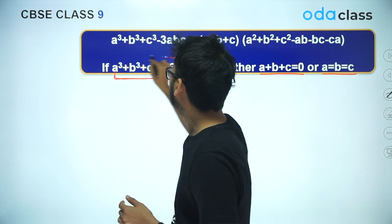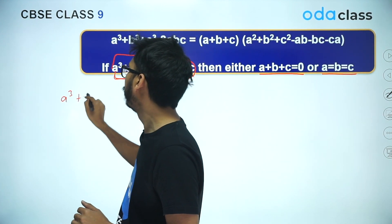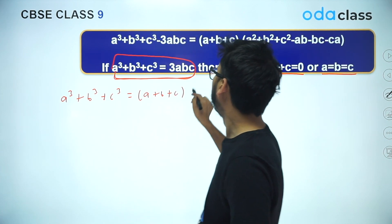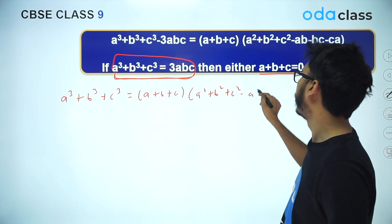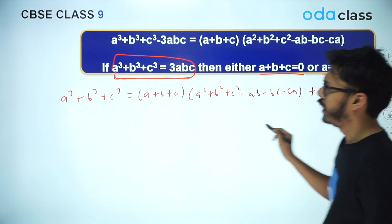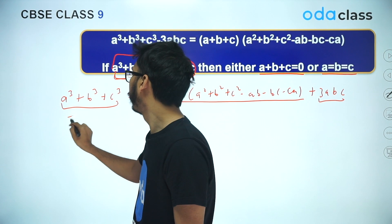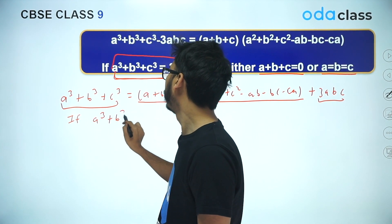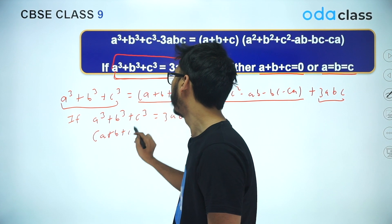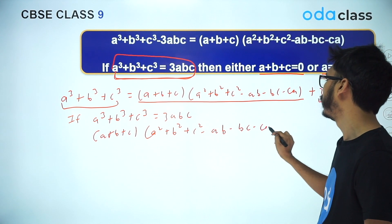Let's talk about this particular detail — if a³ + b³ + c³ = 3abc, then this happens. Notice: a³ + b³ + c³ = (a + b + c)(a² + b² + c² − ab − bc − ca) + 3abc. Now if I say a³ + b³ + c³ is equal to 3abc, then clearly this whole expression equals 3abc, so the remaining part must be zero. That means (a + b + c)(a² + b² + c² − ab − bc − ca) = 0.